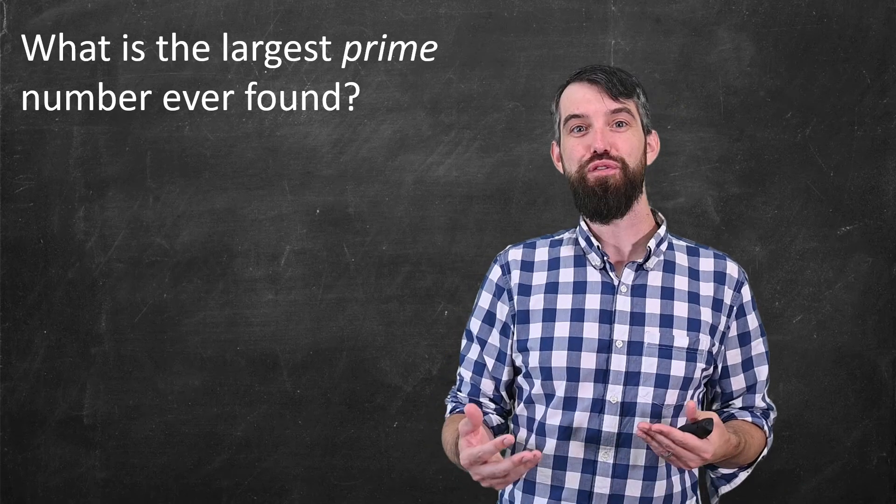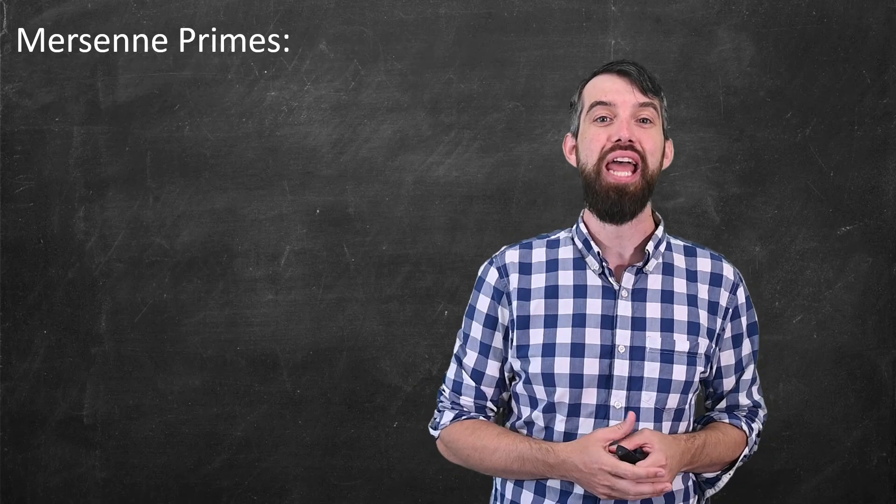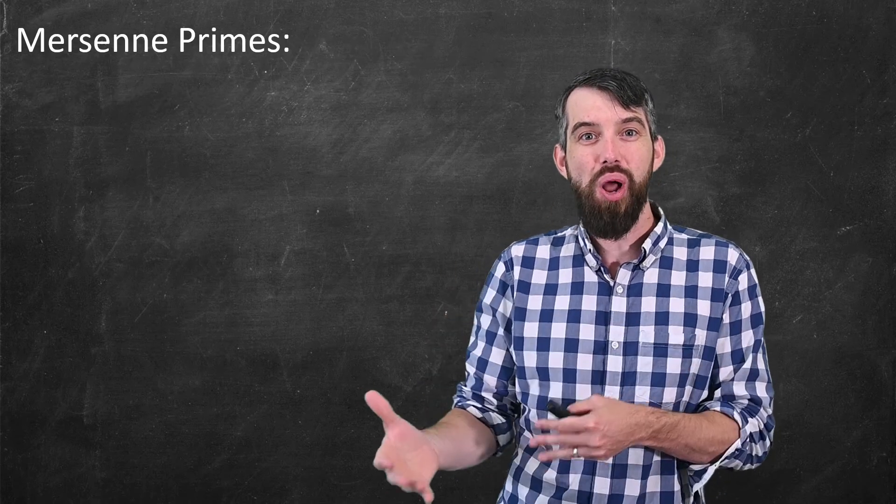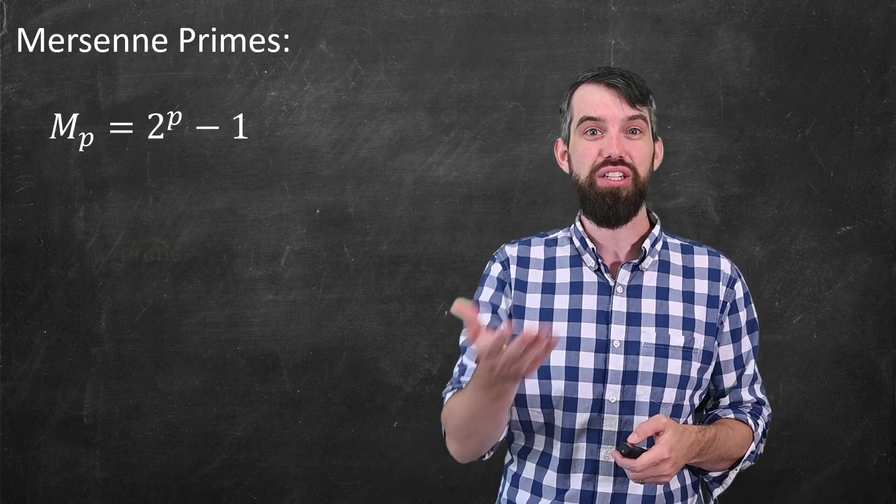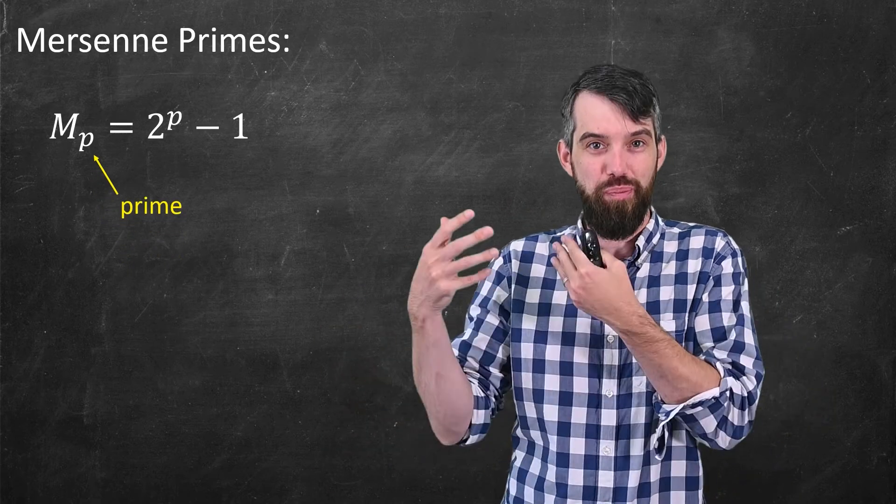Well, one way to do this is to focus on a specific class of prime numbers called Mersenne primes. Mersenne primes are numbers that look like 2 to the power of something minus 1. That is, if you start with a prime number p,